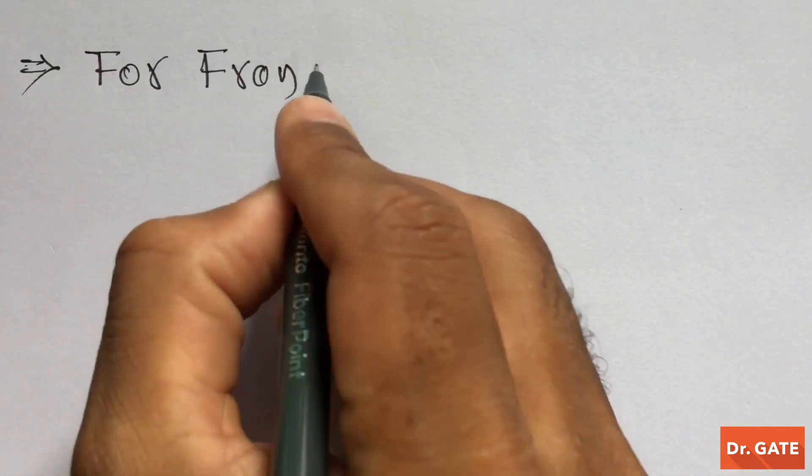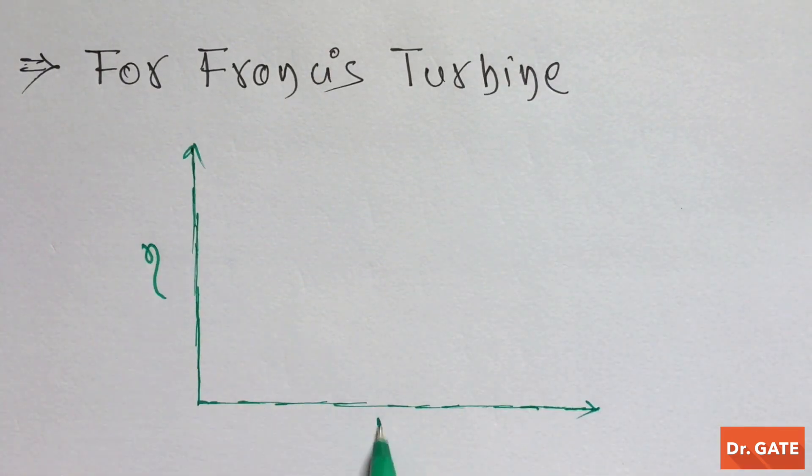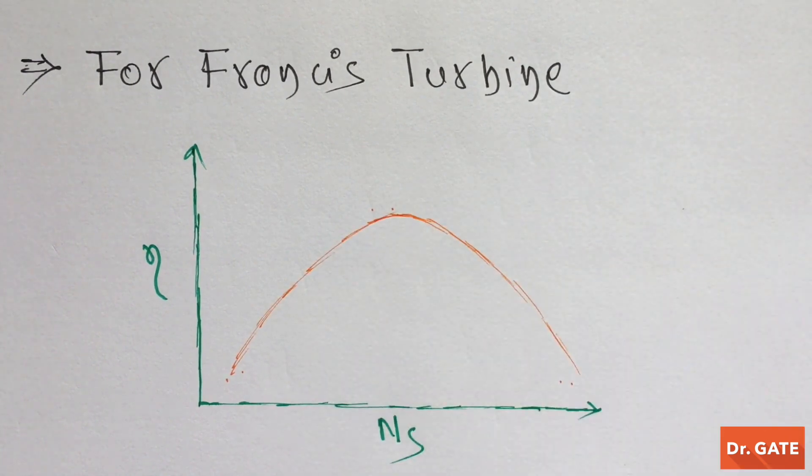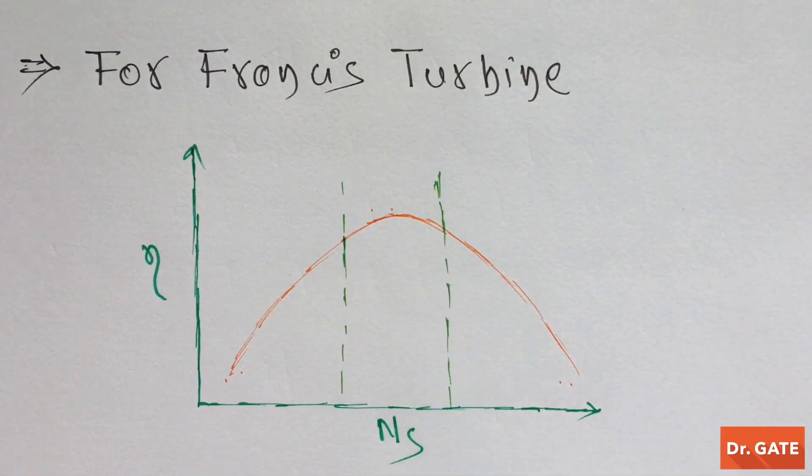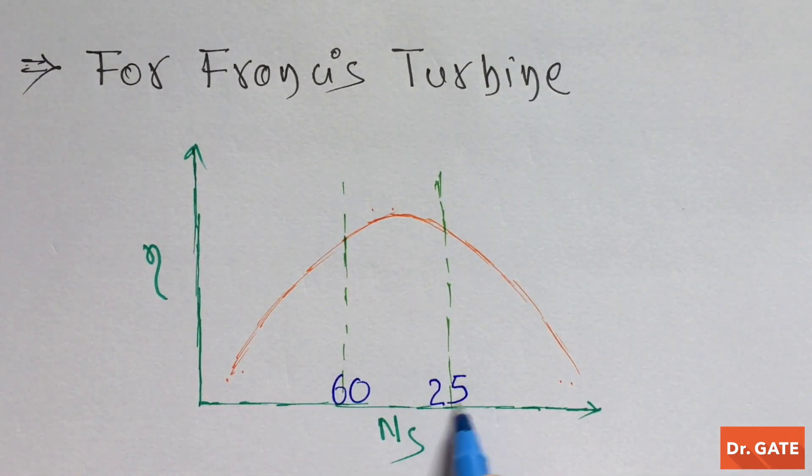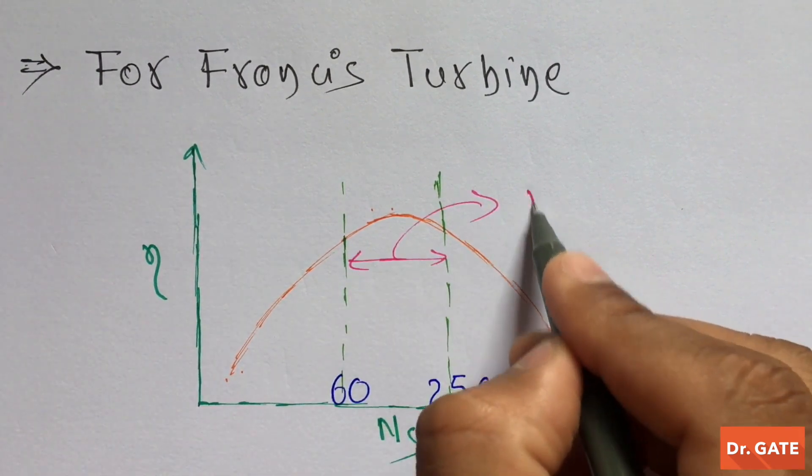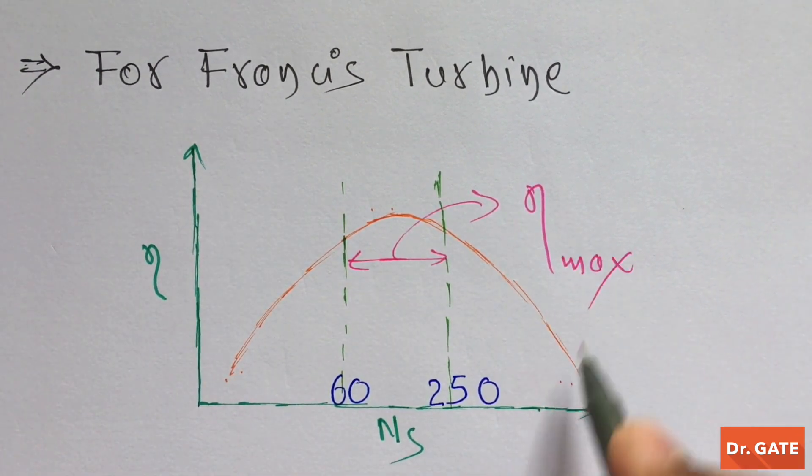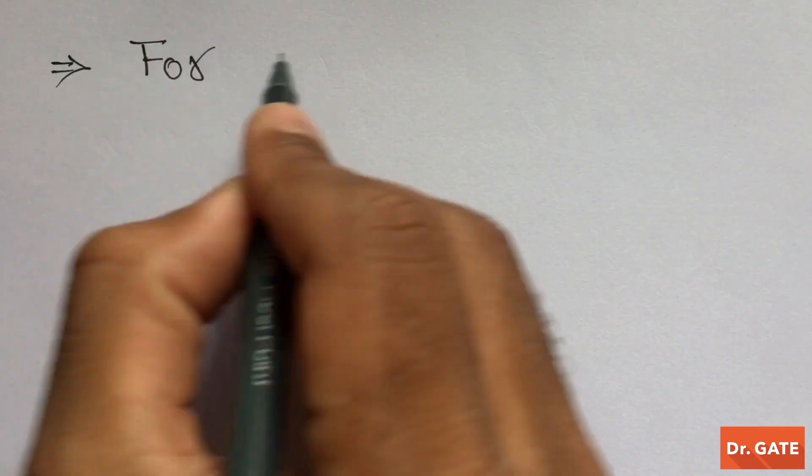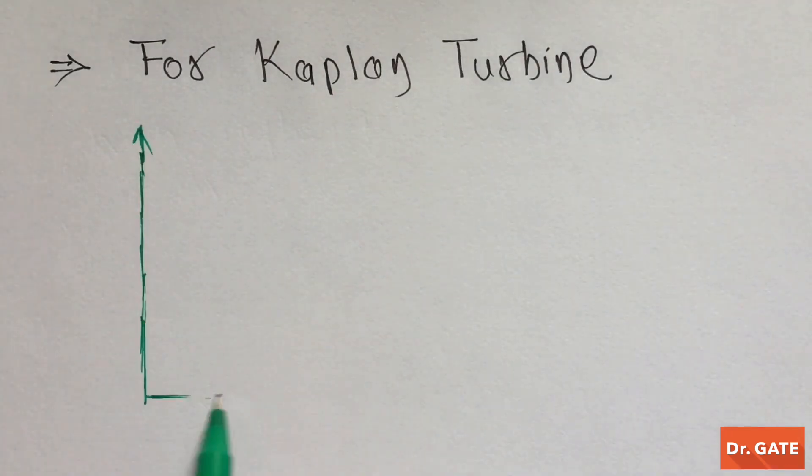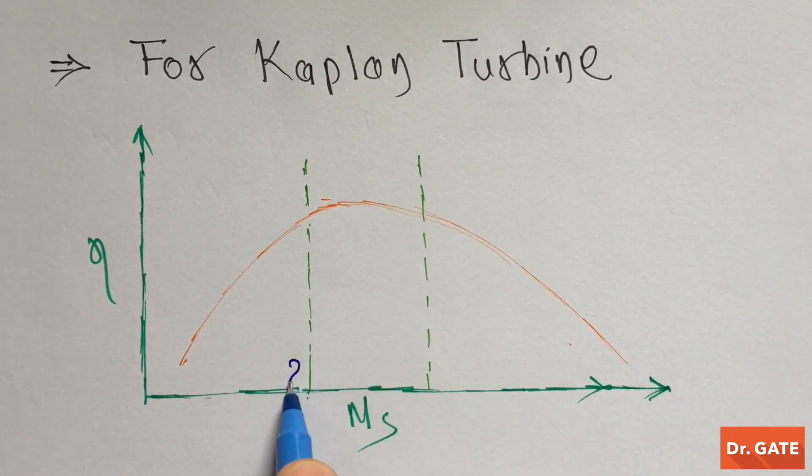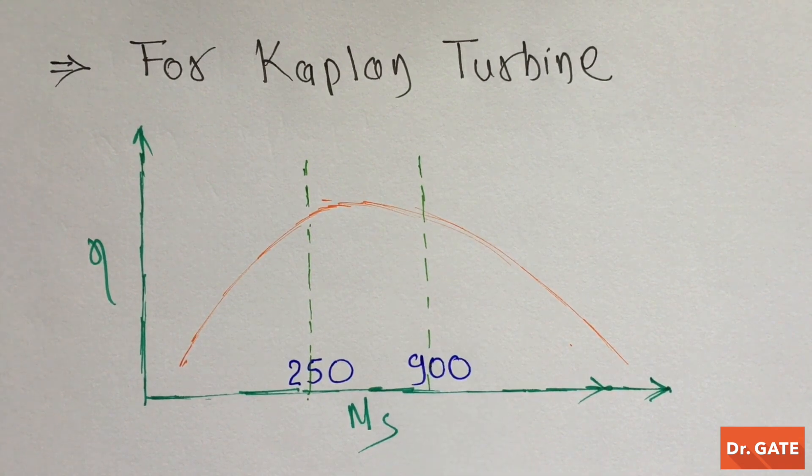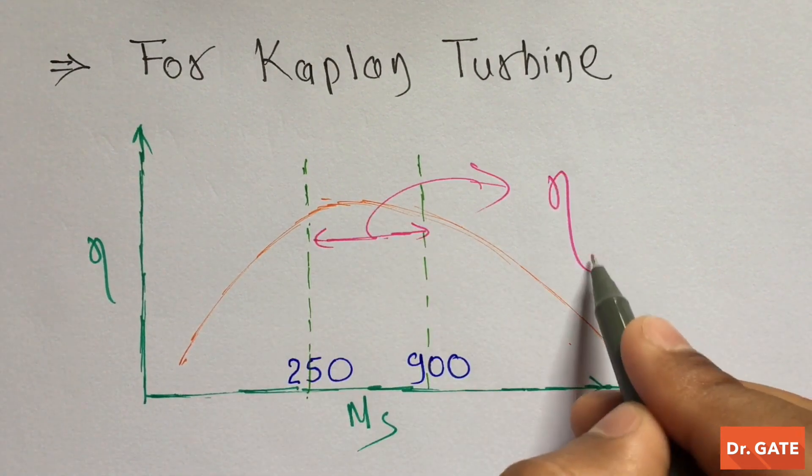For Francis turbine, the nature of graph is again same. And here when specific speed is between 60 to 250, its efficiency is almost maximum. And for Kaplan turbine, when specific speed is between 250 to 900, its efficiency is almost maximum.